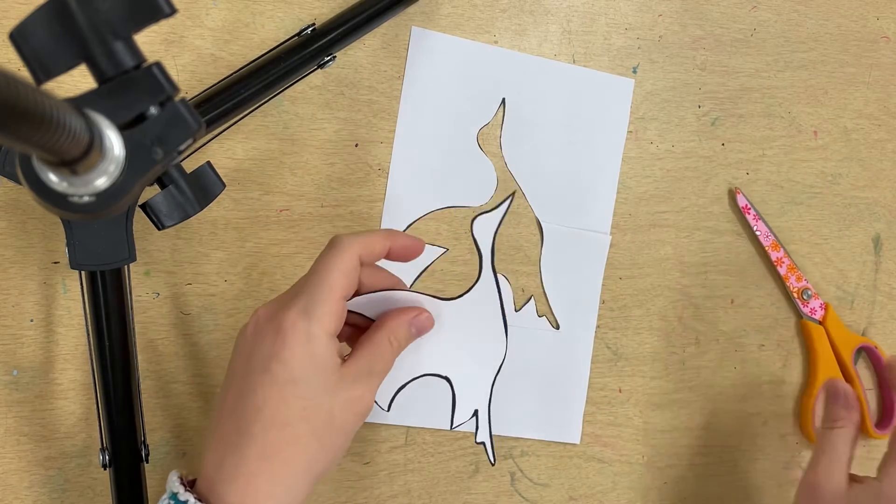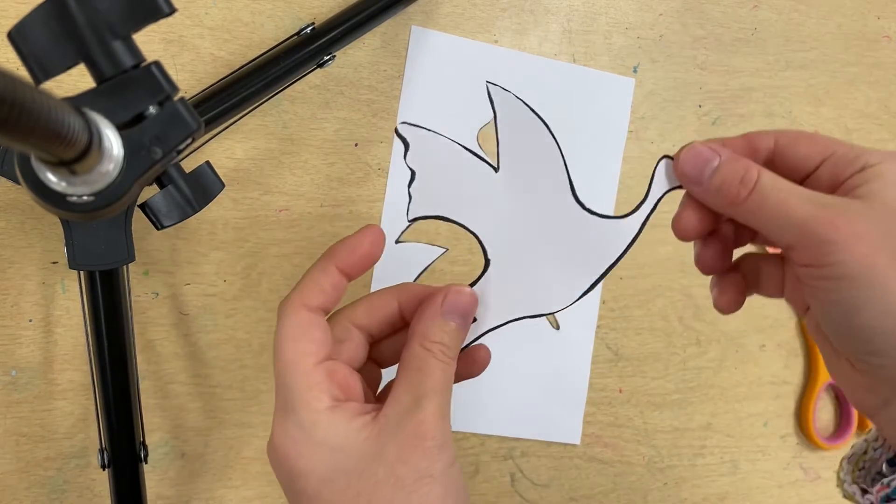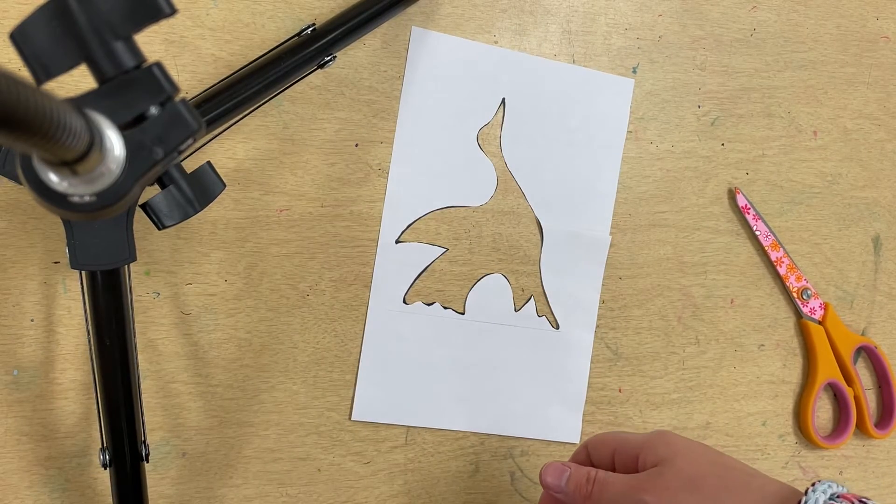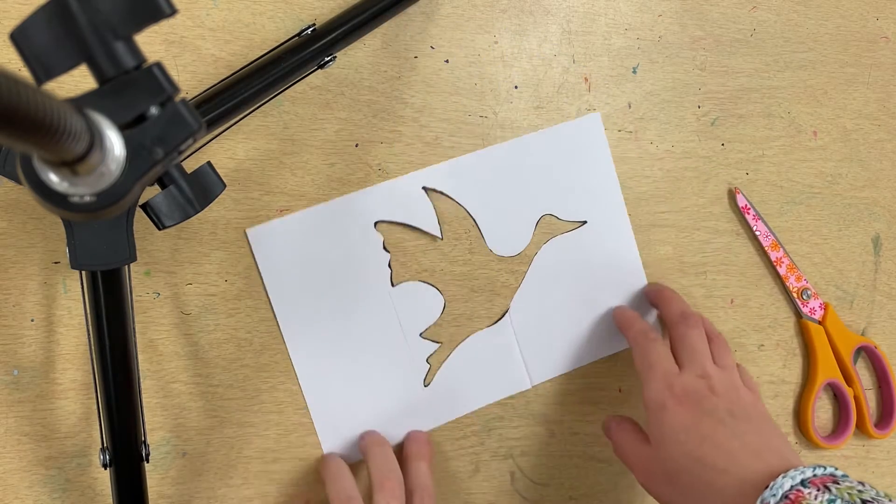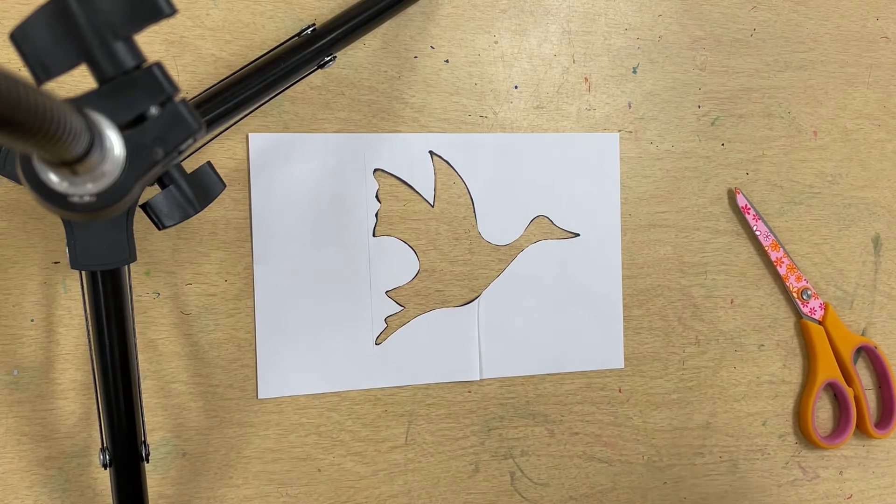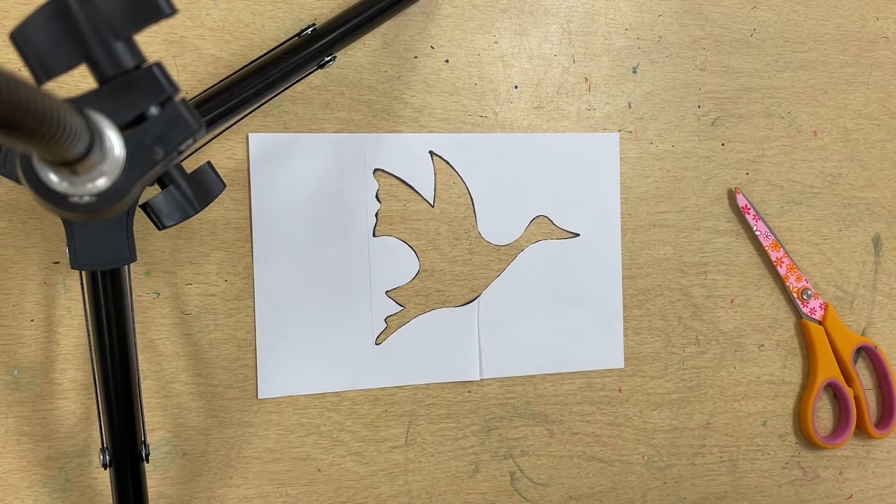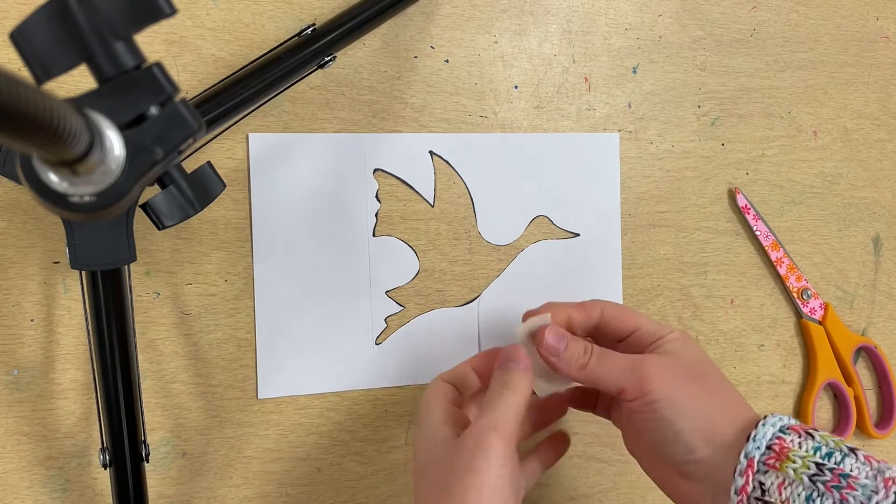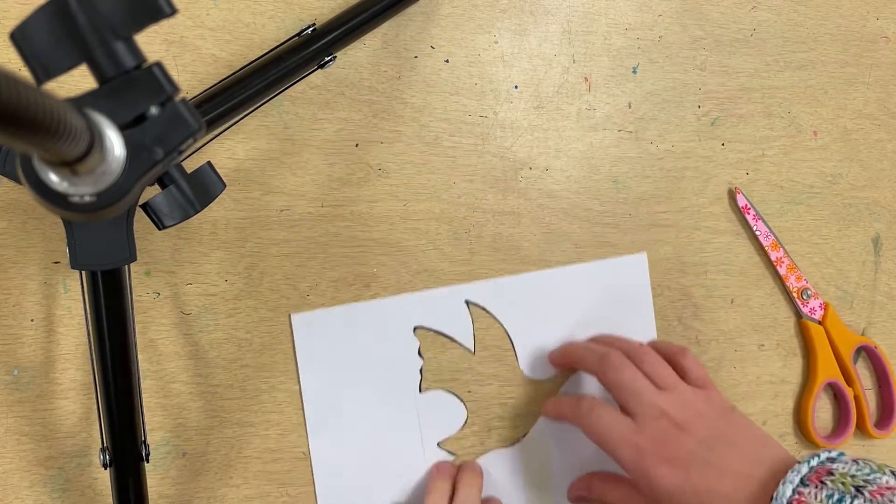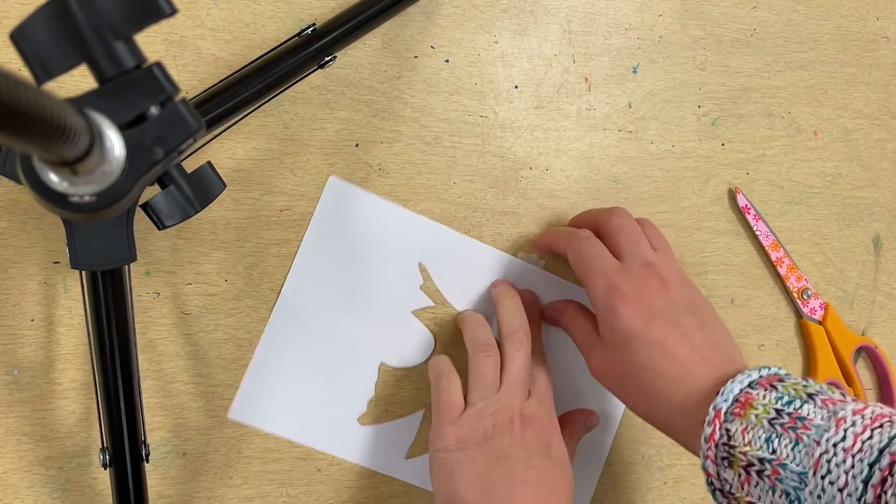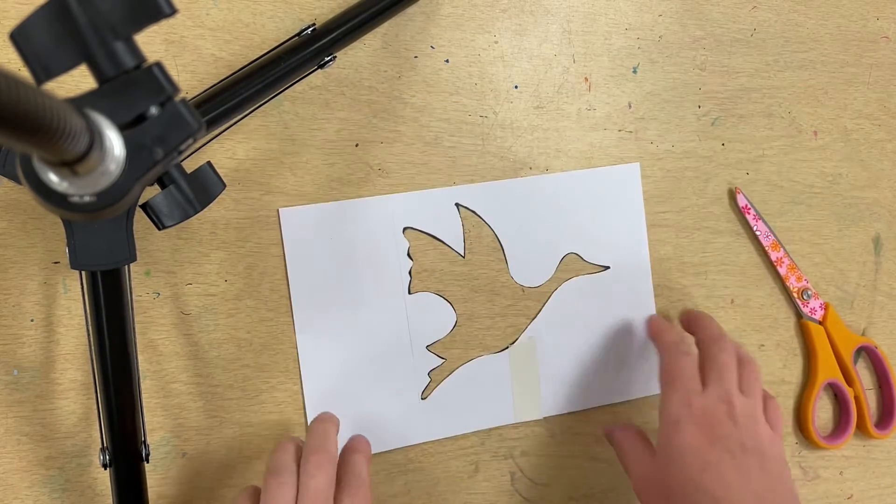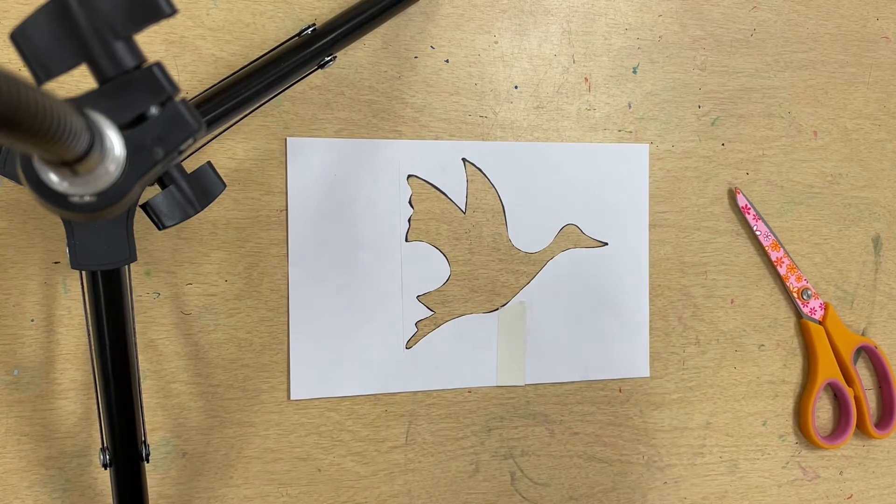Now I have my positive shape stencil here, and I'm going to set this aside because we're not going to need this today. Here is my negative space stencil. You can see there's just one little slit in it. If that bothers you, you can take a piece of tape and tape it up. Now I'm ready to use this negative space stencil.